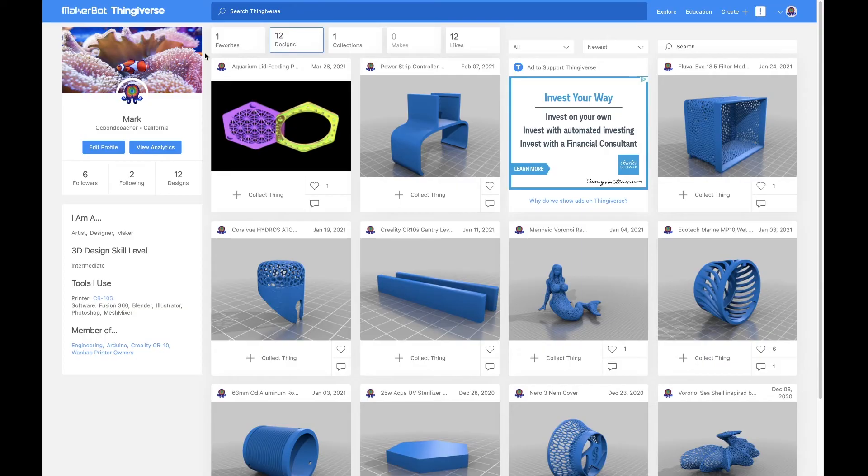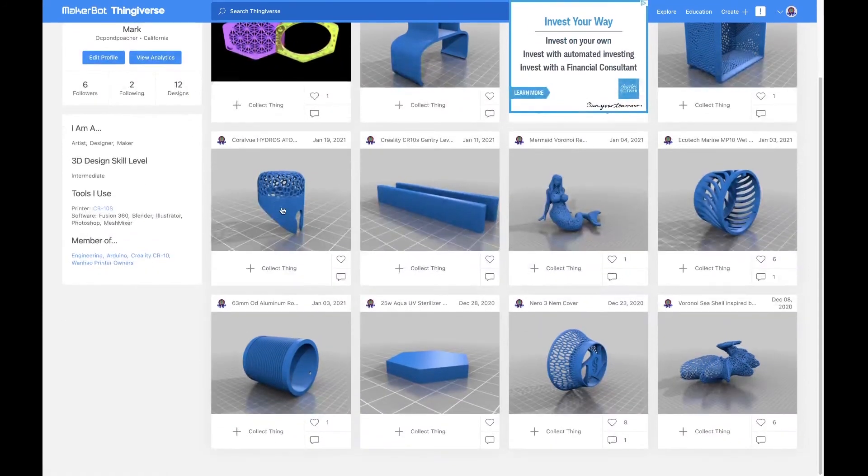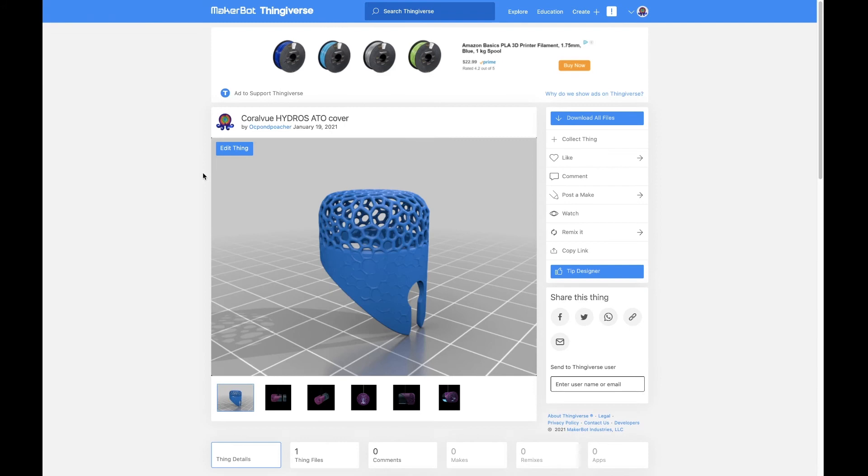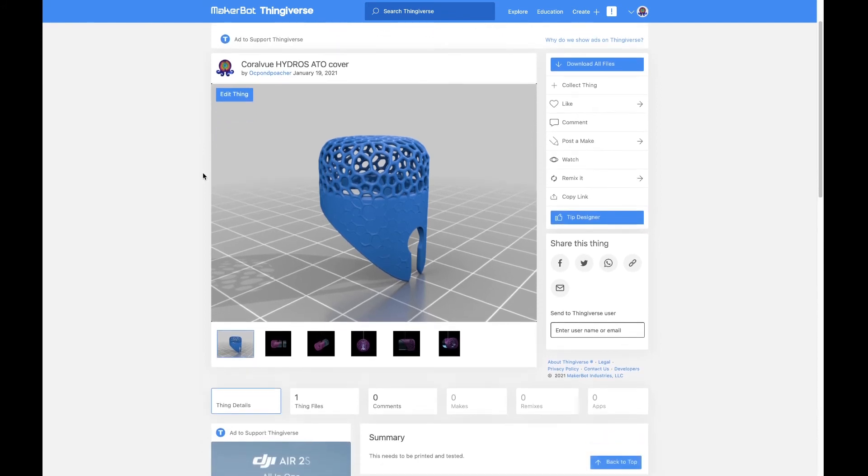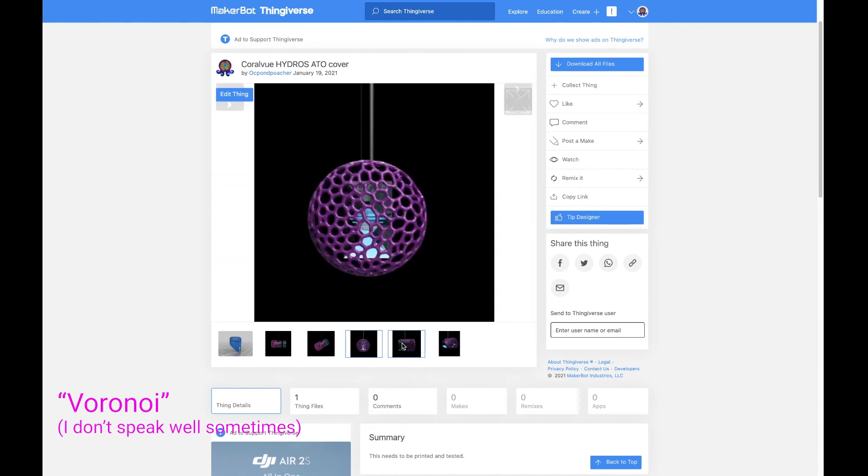If you have the capabilities to print this model yourself, I've also made the files available on Thingiverse, but you're going to need a resin printer. It's highly unlikely that an FDM printer is going to be able to print out the really fine Varoni-style mesh structure that I created.